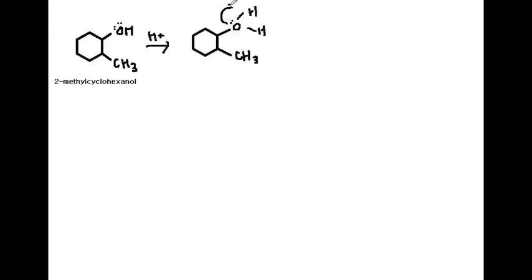This is the mechanism for dehydration of 2-methylcyclohexanol. The 2-methylcyclohexanol is protonated by the acid, forming a water molecule, and then this water molecule is lost. This loss of water molecule leads to formation of a secondary carbocation, and this secondary carbocation can form two products.